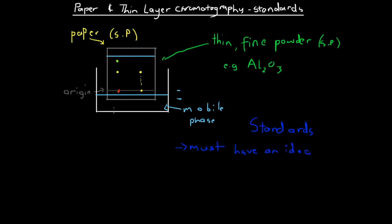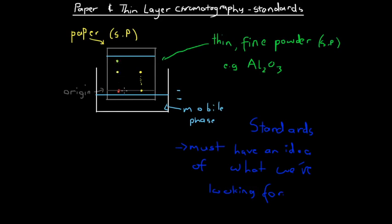For example, say the red dot is orange juice and the yellow dot is a pure solution of vitamin C. We run both on the same chromatogram. If we get a yellow spot from the fruit juice at the same height and color as the yellow spot from the pure vitamin C, that suggests the fruit juice component is caused by vitamin C — telling us the fruit juice contains vitamin C.